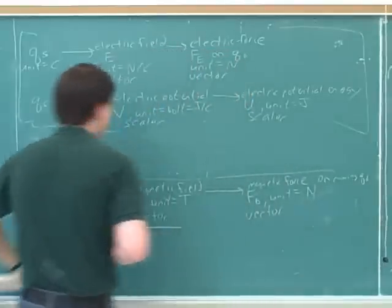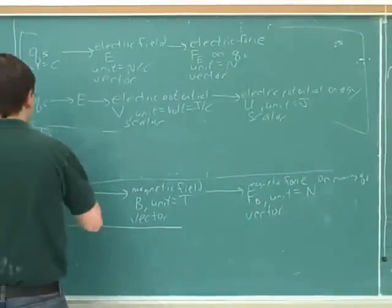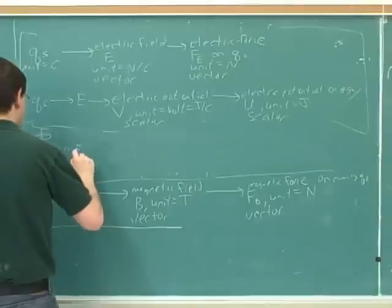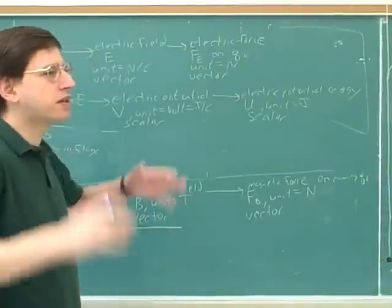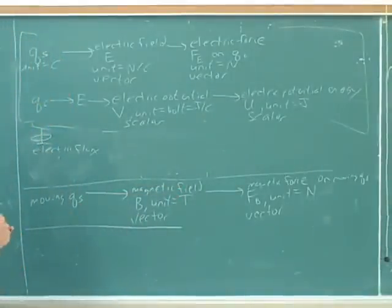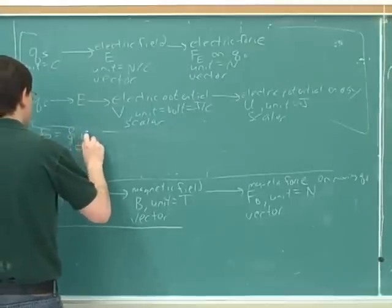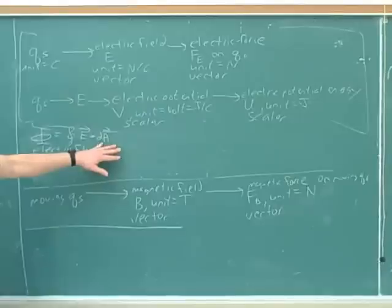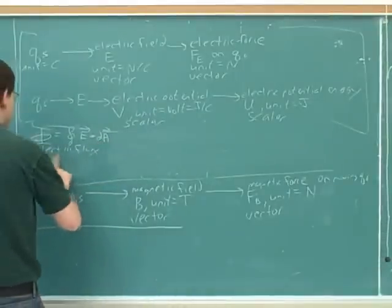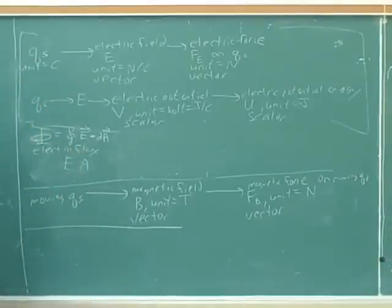Yeah, I think it's called V. I like the circle — that's right. Now remember, the electric flux is a kind of measure of how much electric field is penetrating a surface, or the amount of electric field lines penetrating a surface. This was our general formula for working with that, but we saw that in many cases this simplified to E times A — the electric field times the area.